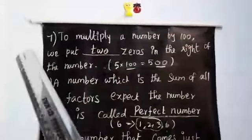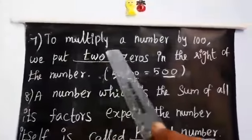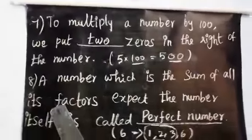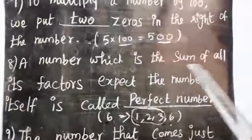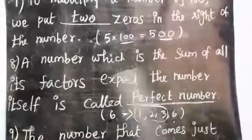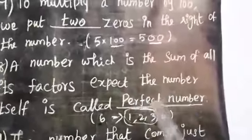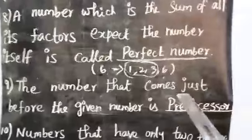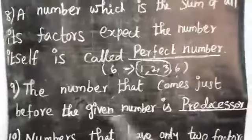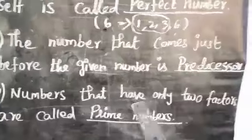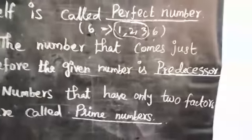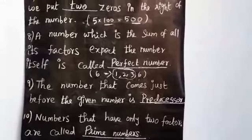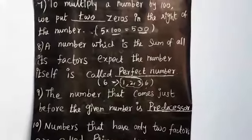Once again: seventh — to multiply a number by 100, put two zeros on the right. Eighth — a number which is the sum of all its factors except itself is called a perfect number. Ninth — the number just before the given number is the predecessor. Tenth — numbers with only two factors are prime numbers. Dear children, take your math notebook and write fill in the blanks one to ten, one time. Thank you.